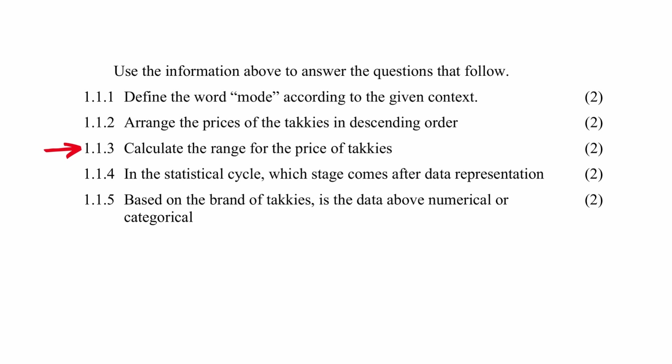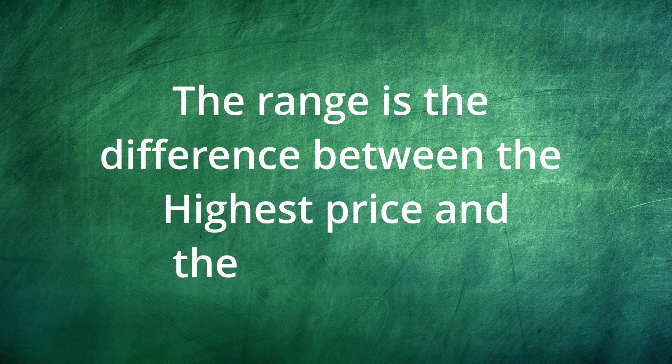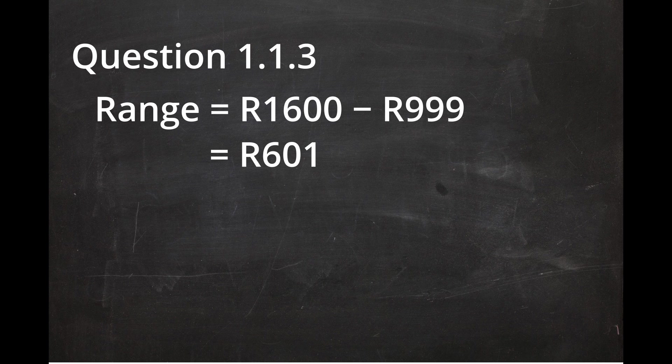In question 1.1.3, you are instructed to calculate the range of the prices of the takkies. The range is the difference between the highest price and the lowest price, so the range is 1600 rand minus 999 rand, and this equals 601 rand.